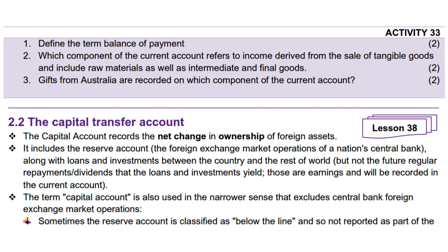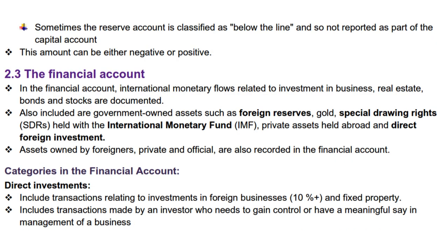The capital account records the net change in ownership of foreign assets. It includes the reserve account, the foreign exchange market operations of a nation's central bank, along with loans and investments between the country and the rest of the world, but not the future regular repayments or dividends that the loans and investments yield — those are earnings and will be recorded in the current account. The term capital account is also used in the narrower sense that excludes central bank foreign exchange market operations; sometimes the reserve account is classified as below the line and so not reported as part of the capital account. This amount can be either negative or positive.